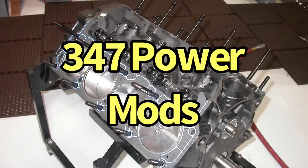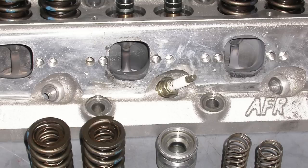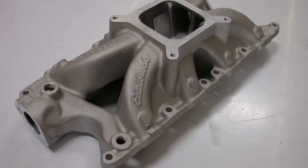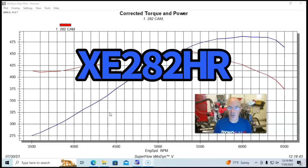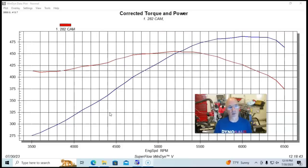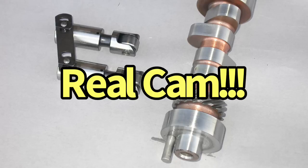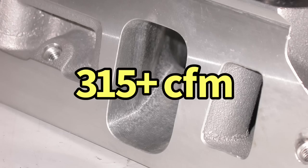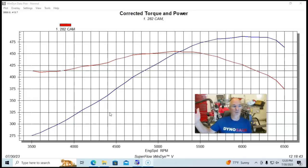Okay. We have our 347 with our Airflow Research heads. It's over 11 to 1 compression. So, you know, it's got some pretty good pop to it. We've got our single plane intake manifold and it's making decent power, but we have a 282 Extreme Energy hydraulic roller cam. And we're thinking, you know, what we need to do is we need to step up in camshaft. We need to have a camshaft that will better take advantage of what these Airflow Research 205 heads have to offer. I mean, after all, they flow a good bit over 300 CFM, even in the lift range that we're looking at, which we want to push something over 600 lift so we could take advantage of the big flow number. So we did exactly that.